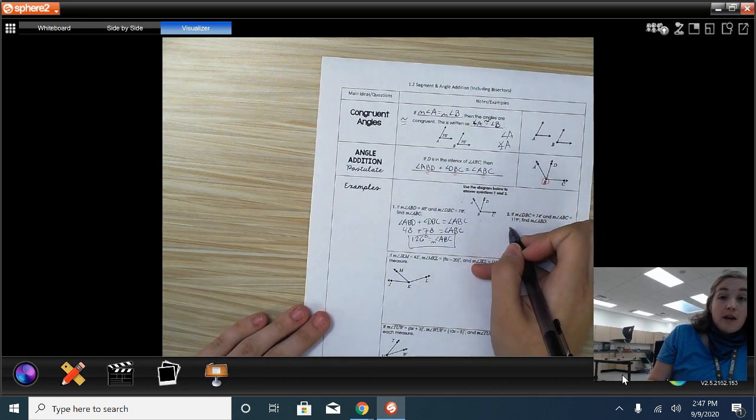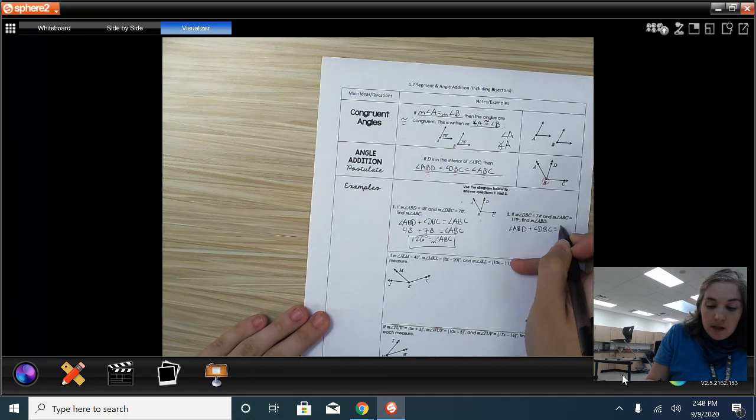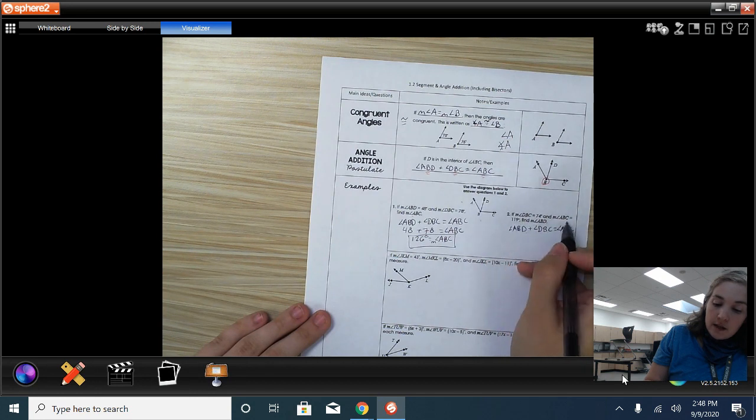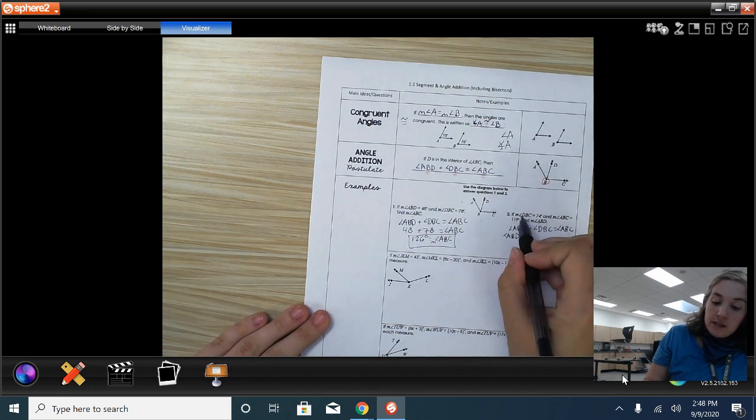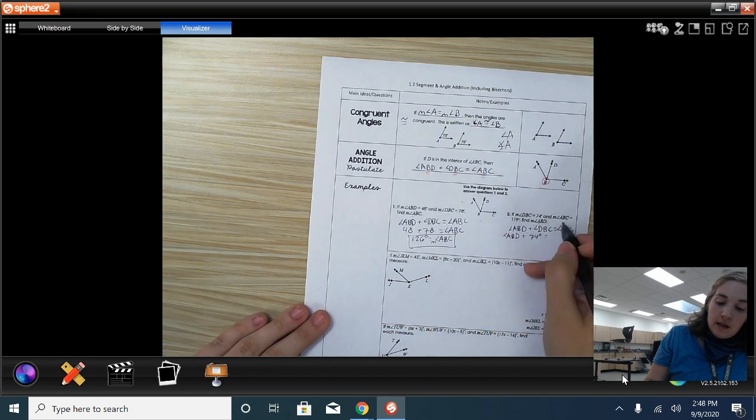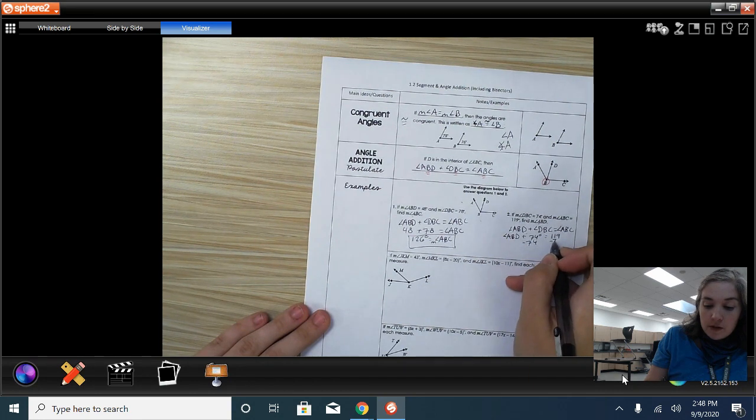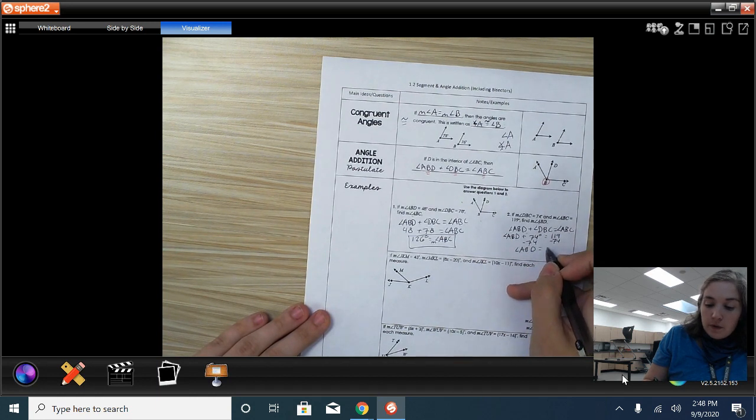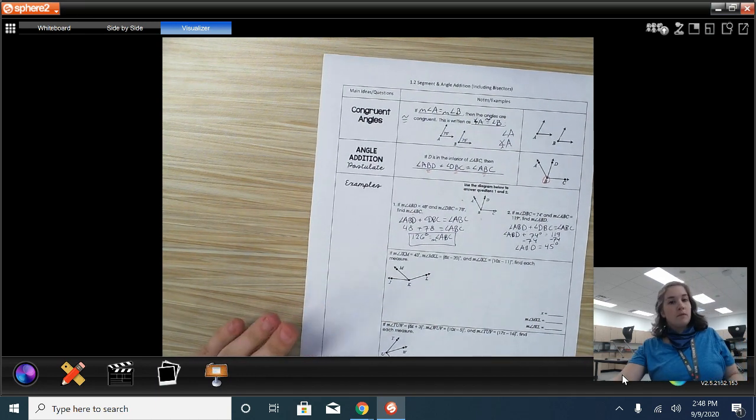For our next one here, again, we're starting off with our angle addition postulate. So, we have angle ABD plus angle DBC is equal to angle ABC. Angle ABD, it tells us, is what we're looking for. So, I'm just going to leave it ABD. They told us the angle DBC is 74 degrees and the measure of angle ABC is 119 degrees. I want to get angle ABD by itself. I need to subtract 74 degrees from both sides. So, we have angle ABD is equal to 45 degrees.